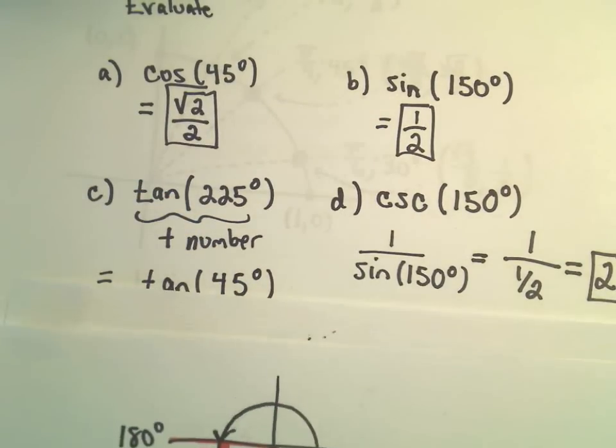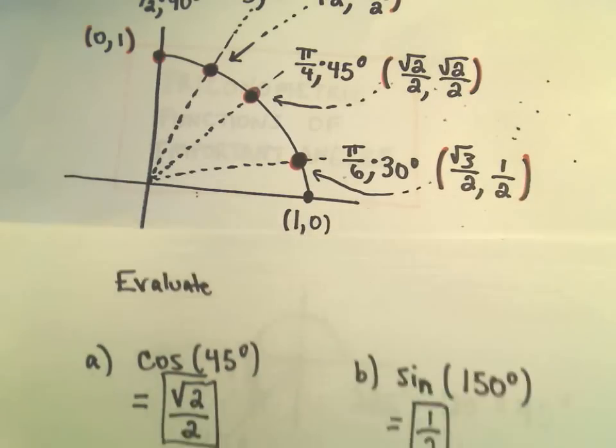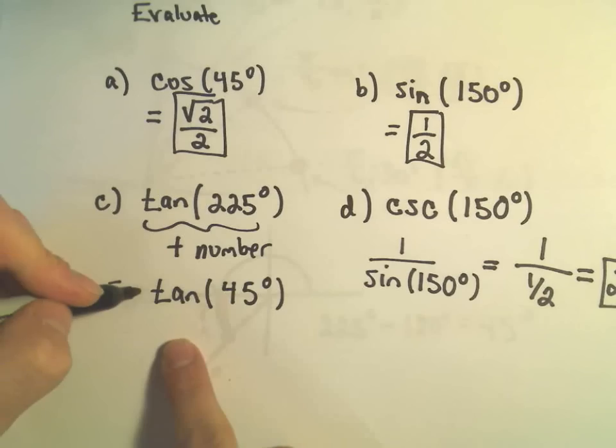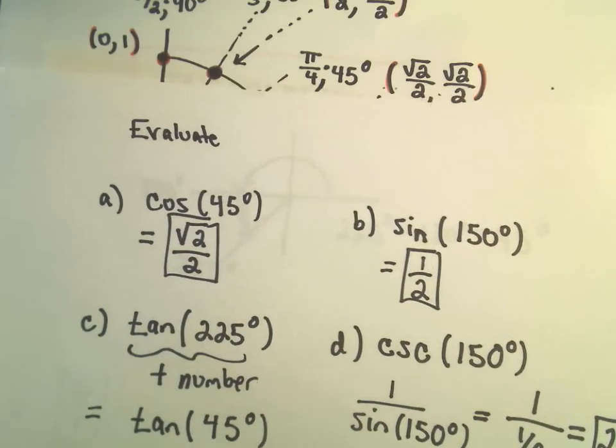And in the first quadrant, all the trig functions are positive by definition. So I don't have to worry about changing the sign or adding a negative or anything like that. So okay, to figure out tangent of 45 degrees.